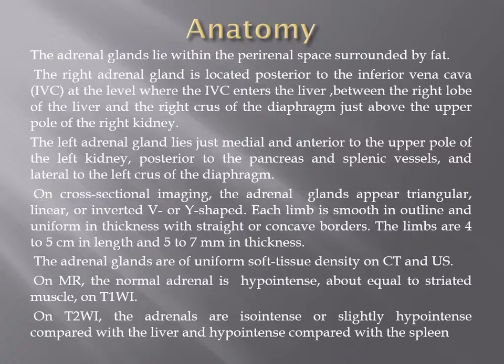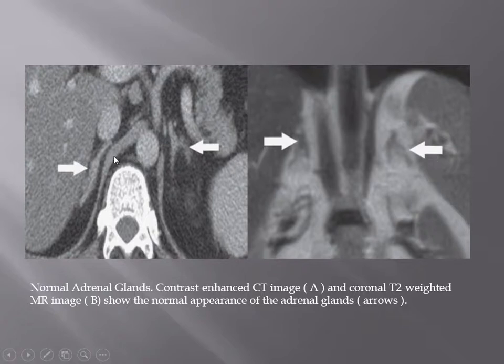On cross-sectional imaging, the normal adrenal gland appears as a soft tissue density on CT, with a V, inverted U, or Y shape. Each limb has a smooth outline and uniform thickness — about 4 to 5 cm in length and up to 7 mm thickness. On T1 it appears hypointense or equal to striated muscle; on T2 it appears iso- to hypointense relative to the liver and hypointense to the spleen. This is the normal adrenal gland on multi-detector CT, and on MRI showing the inverted V or Y shape.